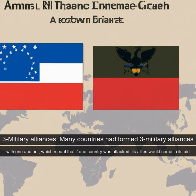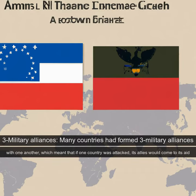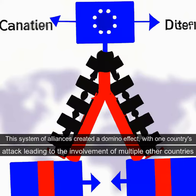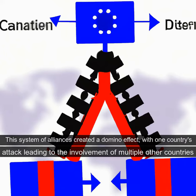3. Military Alliances. Many countries had formed military alliances with one another, which meant that if one country was attacked, its allies would come to its aid. This system of alliances created a domino effect, with one country's attack leading to the involvement of multiple other countries.